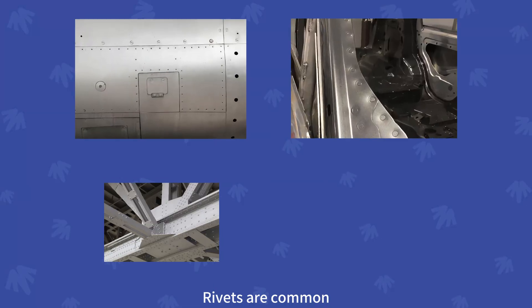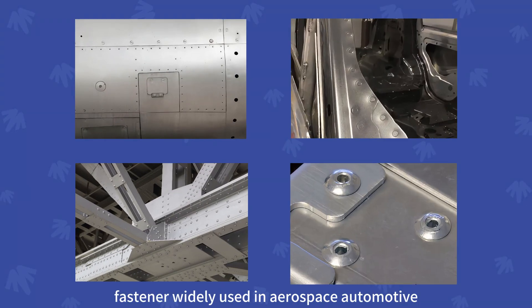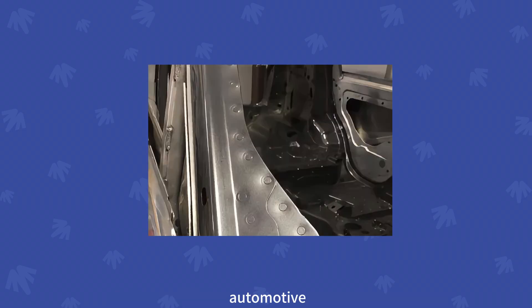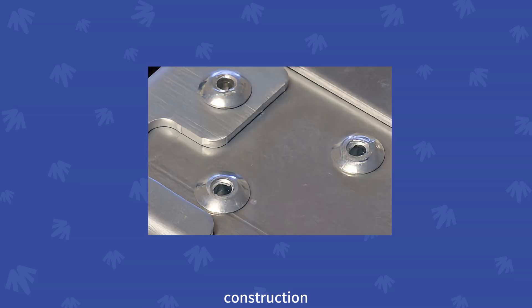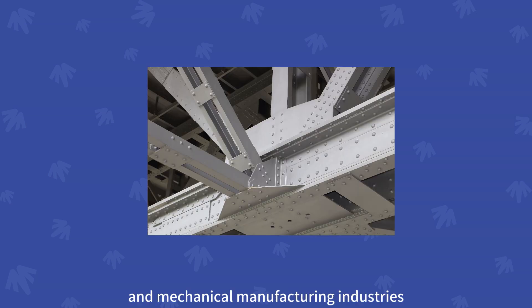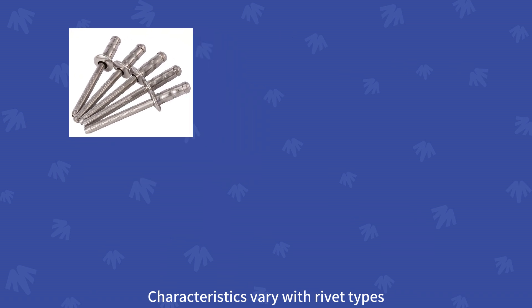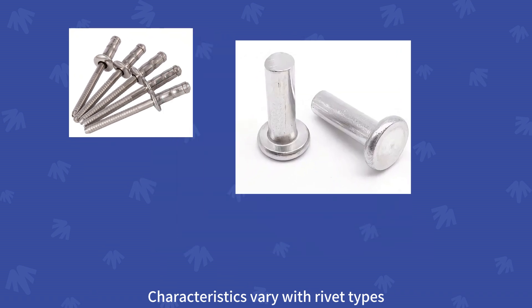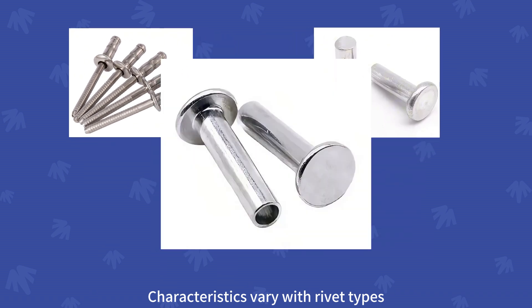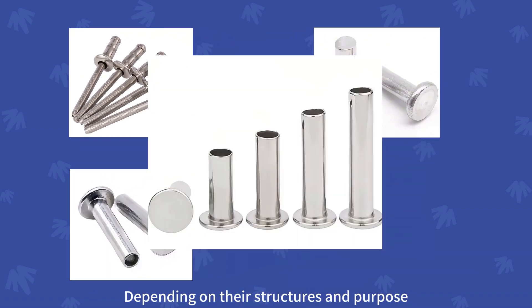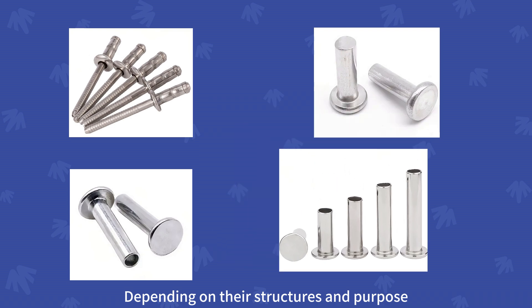Rivets are common fasteners, widely used in aerospace, automotive, construction and mechanical manufacturing industries. Characteristics vary with rivet types, depending on their structures and purpose.